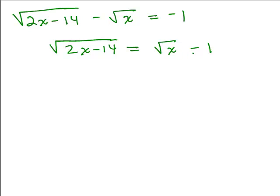Notice on the right-hand side, the square root is only over the x, so I have a binomial on the right side. Now that I've isolated the square root of 2x minus 14, I can square both sides. When we square a square root, we get what's underneath the square root, so that'll give 2x minus 14.